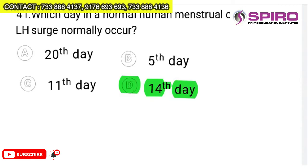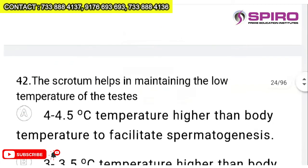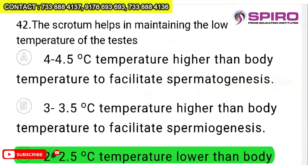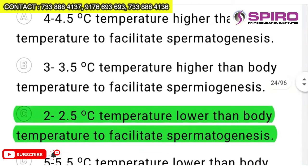Question 41: on which day in the normal human menstrual cycle does LH surge normally occur? The answer is the 14th day — during LH surge, ovulation happens. Question 42: the scrotum helps maintain low temperature of the testis — 2 to 2.5 degrees centigrade lower than body temperature — to facilitate spermatogenesis. More or less than this will affect sperm production.